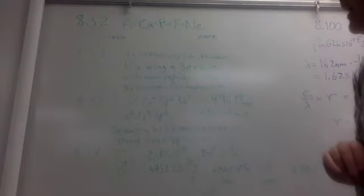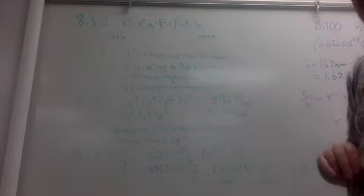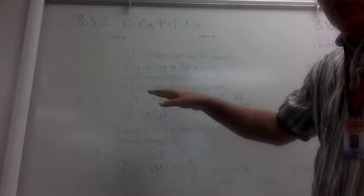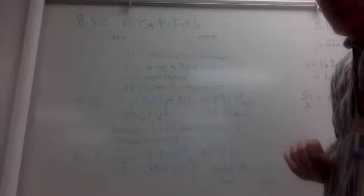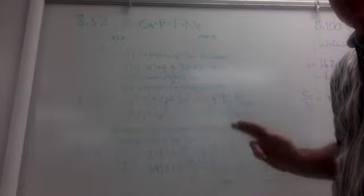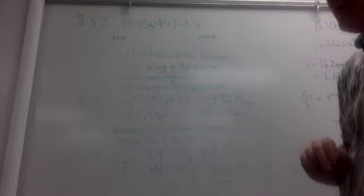In 8.54, we're asked to explain why, if there is a trend in the third energy level for increasing ionization energy as you go to the right, why is aluminum less than magnesium? Because aluminum is to the right of magnesium, but it's less ionization energy.